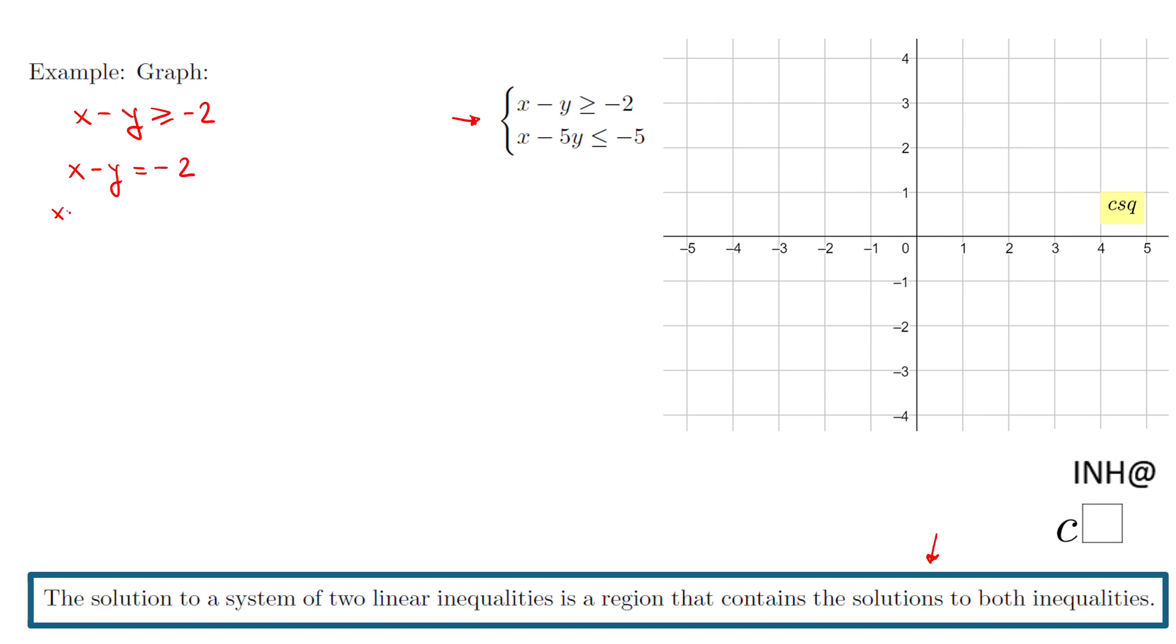Make x equals zero. I get negative y equals negative two, or y equals positive two. So my first point that I'm going to plot will be x equals zero, y equals two, which is right here.